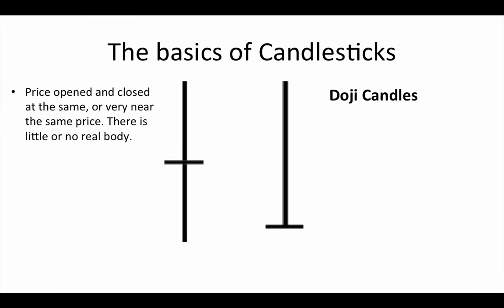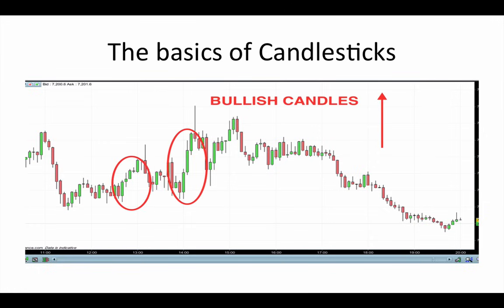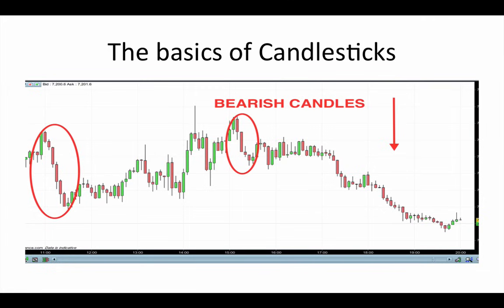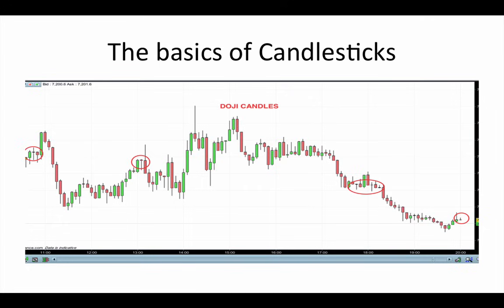And that is the basic foundation of reading a chart. If we reintroduce the chart from earlier, you'll see that all of the information present is simply based around price action. Here we can see some bullish candles and the market pushes higher as price increases. Bearish candles show price decreasing and so the market is falling. You can also see that the vast majority of the candles have shadows, tails, or wicks, and usually they are visible on both ends of a candle. And finally we can see some doji candles where price has opened and closed at the same price or very near to the same price.